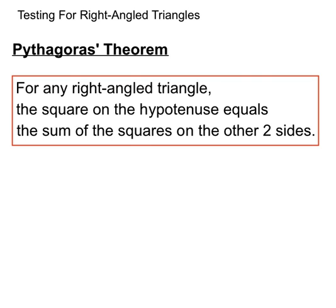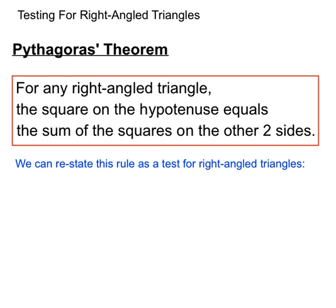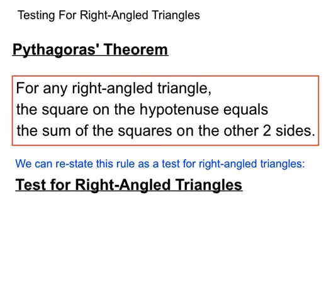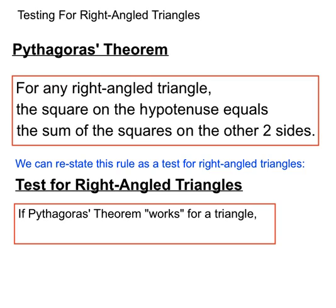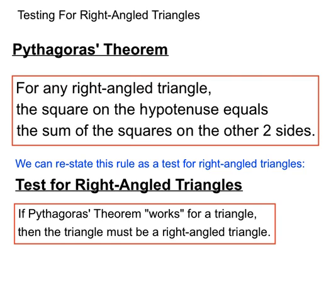We're getting pretty familiar with it by now. Now, we're going to restate this rule as a test for seeing if a triangle is a right angled triangle or not. So we're saying that if Pythagoras' theorem works for a given triangle, then that triangle must be a right angled triangle.